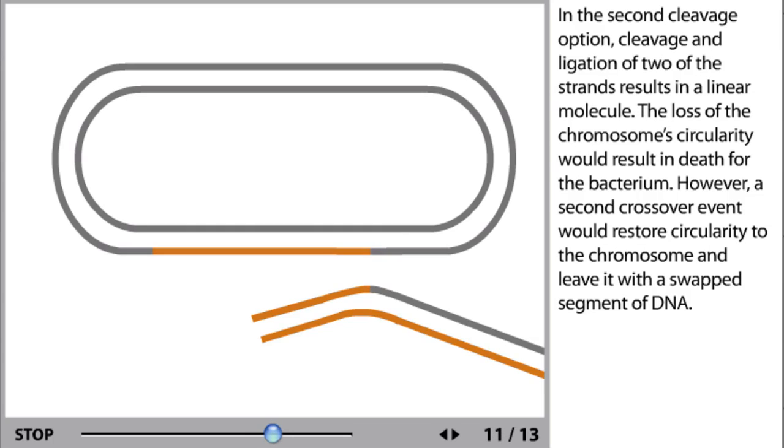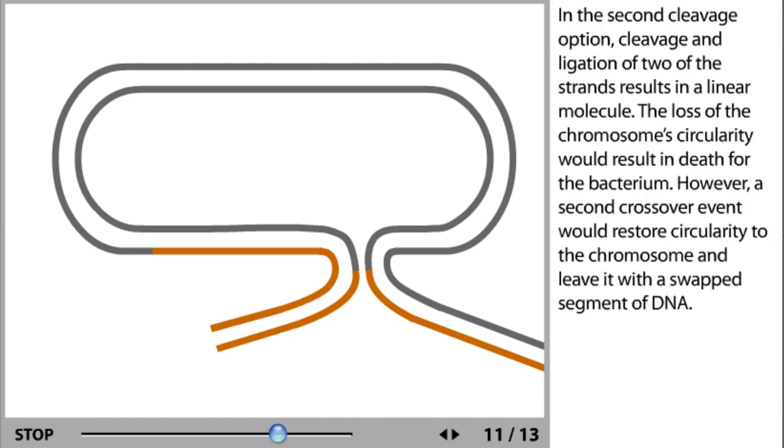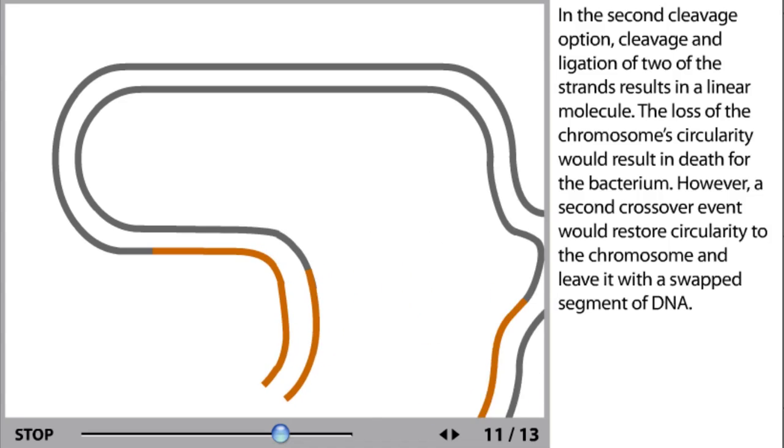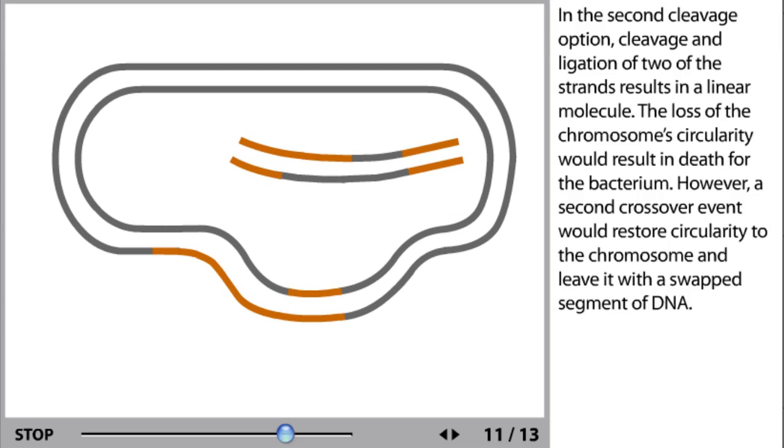In the second cleavage option, cleavage and ligation of two of the strands results in a linear molecule. The loss of the chromosome's circularity would result in death for the bacterium. However, a second crossover event would restore circularity to the chromosome and leave it with a swapped segment of DNA.